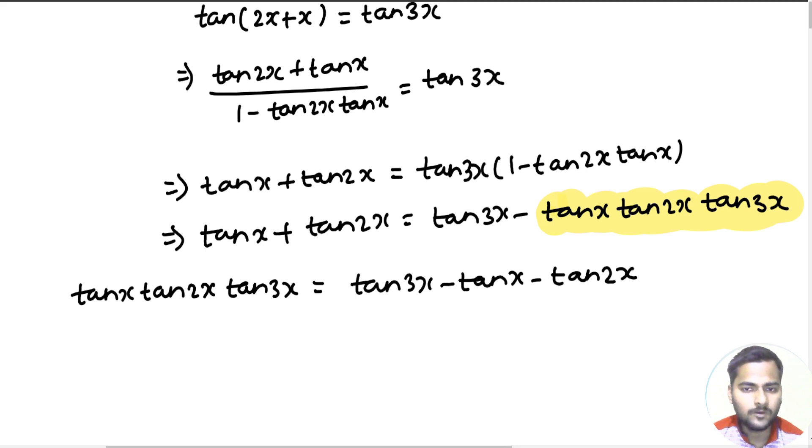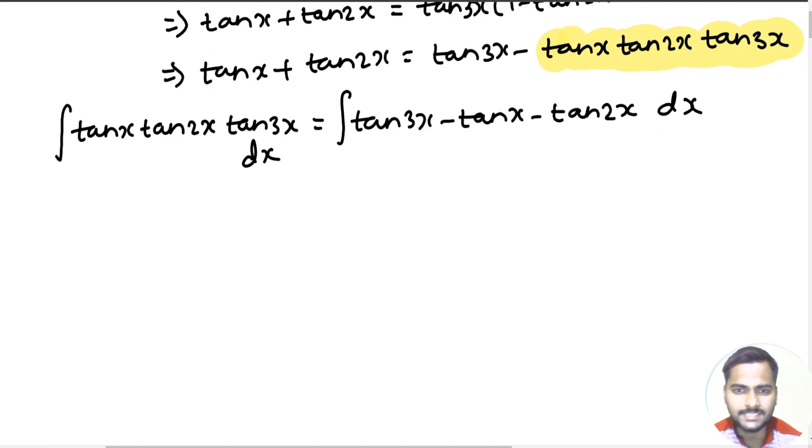So now if I integrate both sides, integration of tan x tan 2x tan 3x is same as integration of the right side. You know integration of tan x is log sec x or minus log cos x. We have two formulas. You can use either of them.